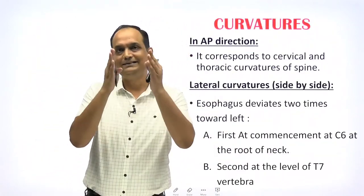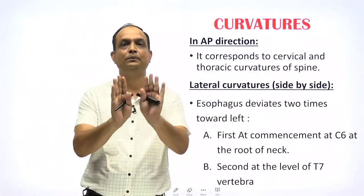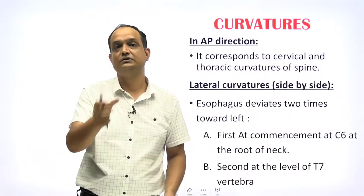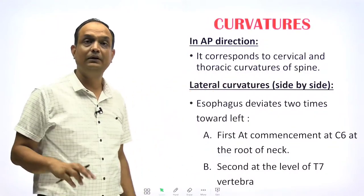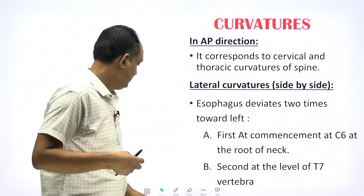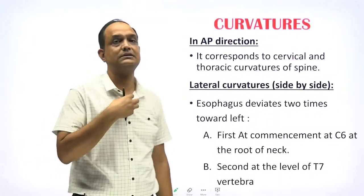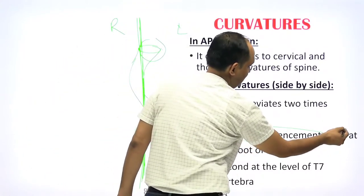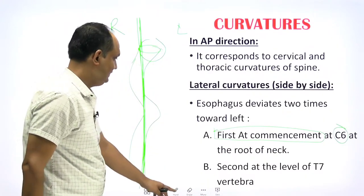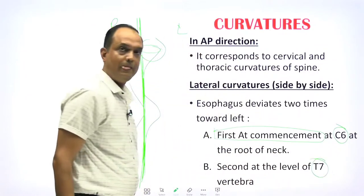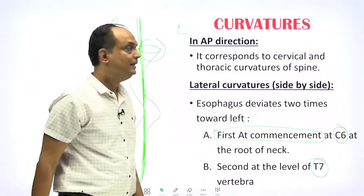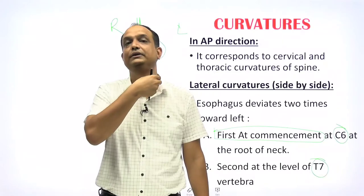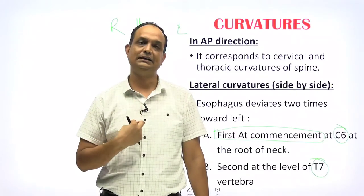Regarding curvatures: there are anteroposterior curvatures, which follow the vertebral column (cervical and thoracic curvatures), and side-to-side curvatures. The esophagus runs mostly in the midline but deviates towards the left at two points: first at the commencement at C6, and second at the level of T7, where it begins deviating left again.